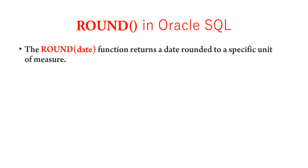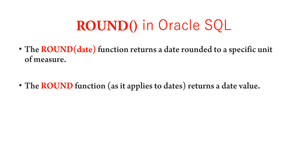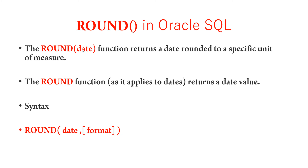Next we will see the round-off date function. The round-off date function returns a date rounded to a specific unit of measure. Similar to the round-off number function returning a numeric output, the round-off date function returns a date as output. The syntax is round-off with the date as input and the format passed as a parameter. We will see examples for both functions.